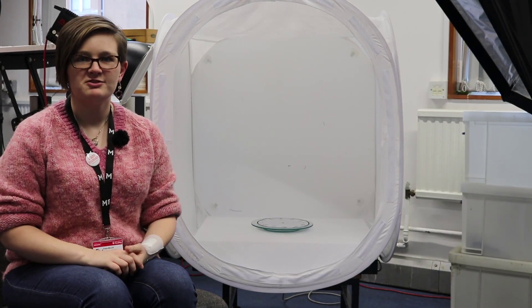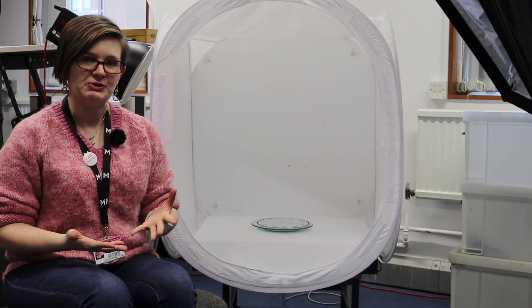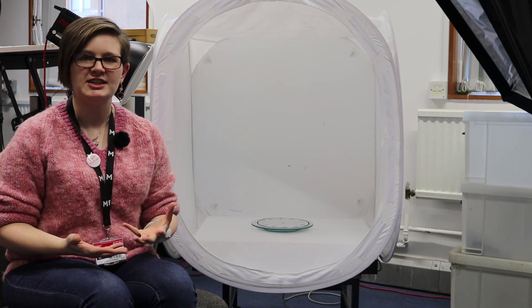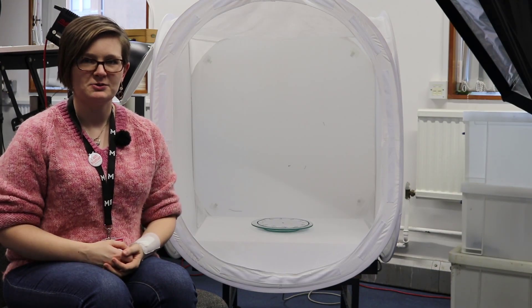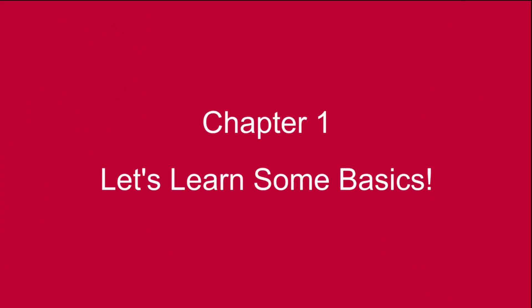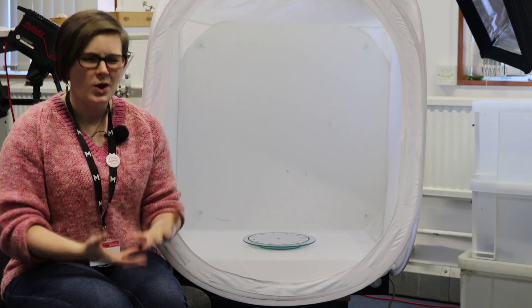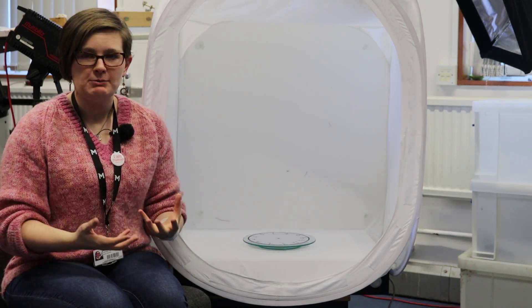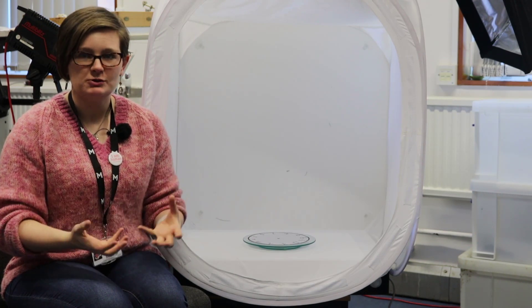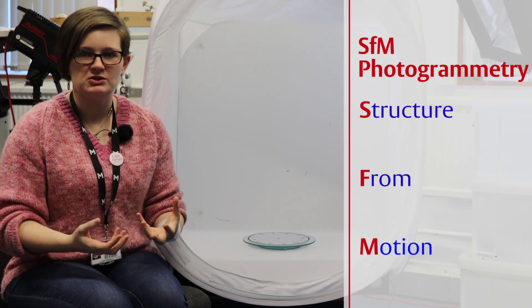This will be a three-part video lesson series. In this video we're going to be discussing what is photogrammetry and how the camera settings work. And then in the second video we will be actually taking photos. Before we get started, we need to define what is photogrammetry and how does it work. The type of photogrammetry we are using is digital photogrammetry called SFM, which is structure from motion photogrammetry.